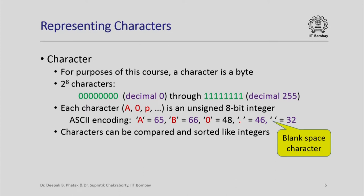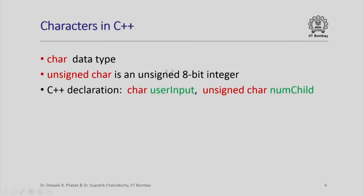Since characters are going to be represented as unsigned 8-bit integers, it is not surprising that characters can be compared with each other and also sorted like integers. In C++ the corresponding data type is denoted by the keyword char. Unsigned char really means an unsigned 8-bit integer, and so this is how you can also do integer operations on very small unsigned integer values.